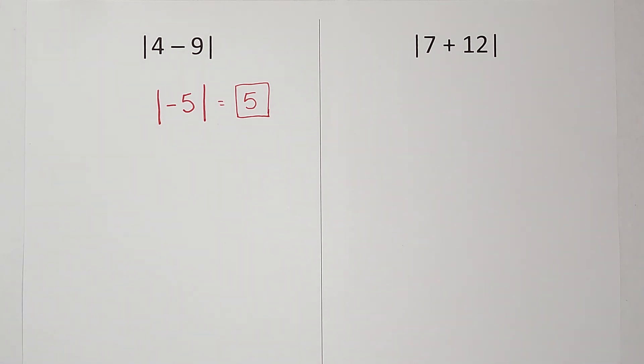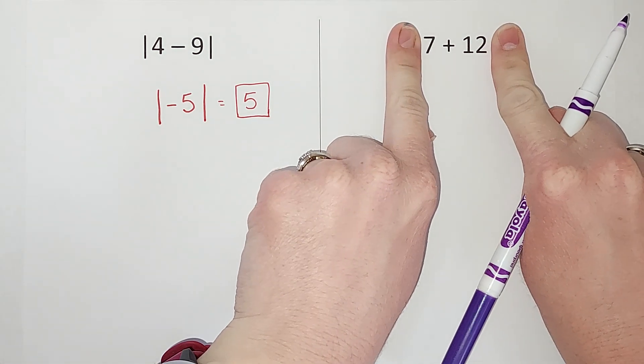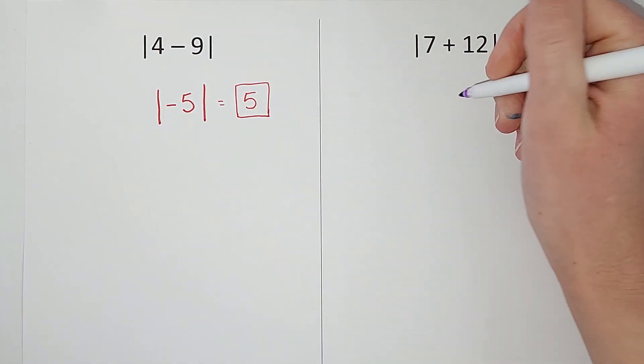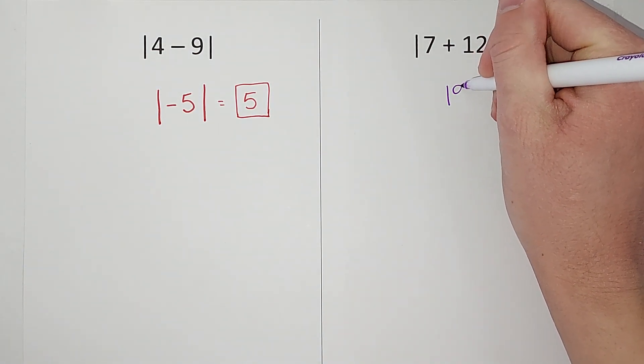All right. Seven plus 12, absolute value of seven plus 12. Well, again, we're going to ignore these for just a second. Seven plus 12 gives me 19.